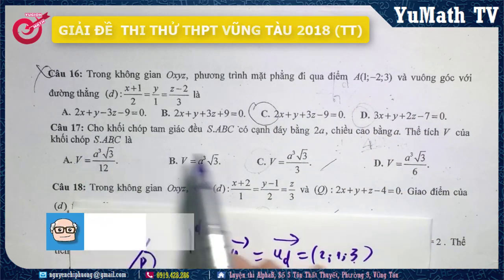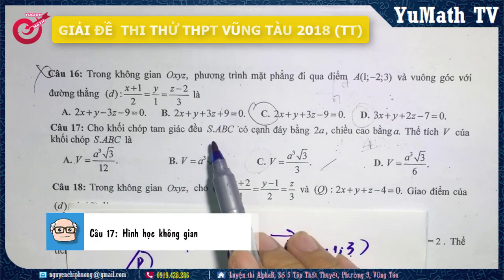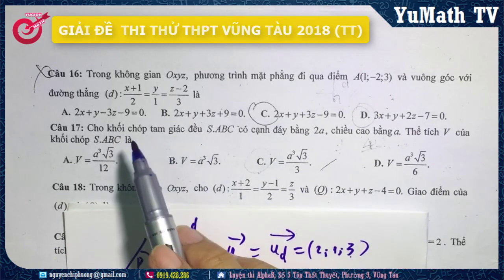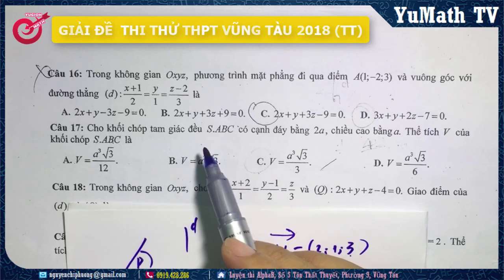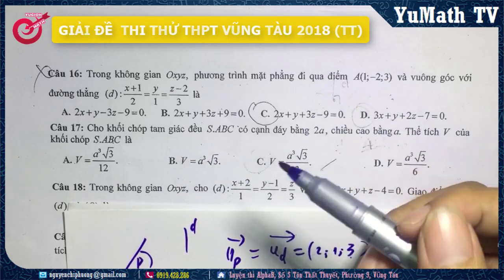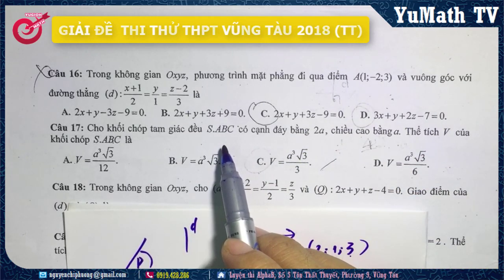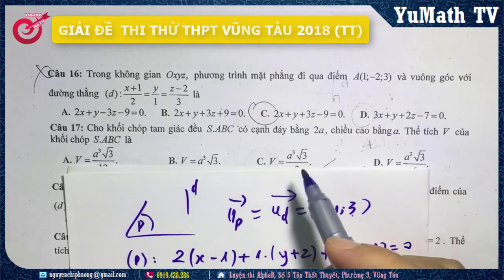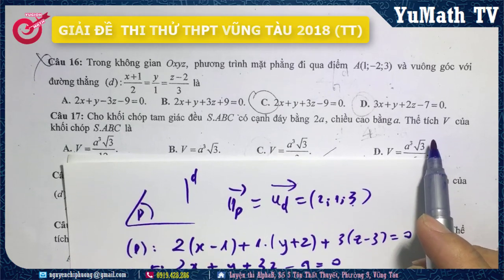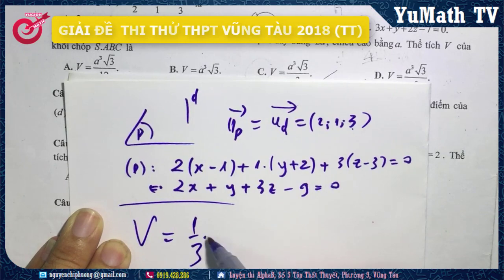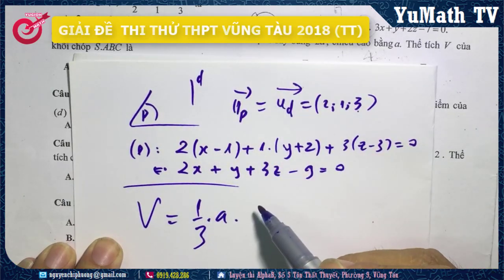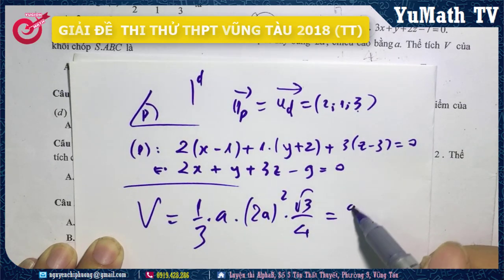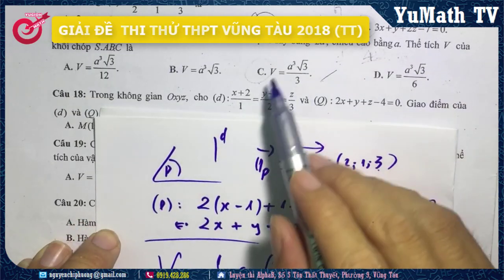Câu số 17 là câu liên quan đến hình học không gian dạng họa hình. Cho khối chóp tam giác đều S-ABC có cạnh đáy bằng 2a, chiều cao bằng a, tính thể tích S-ABC. Khối chóp tam giác đều là khối chóp có đáy là tam giác đều, đường cao hạ từ đỉnh S xuống trọng tâm đáy tam giác ABC. Thể tích bằng 1/3 nhân chiều cao nhân diện tích đáy: V = (1/3) × a × (2a)² × √3/4 = a³√3/3. Mình chọn đáp án C.